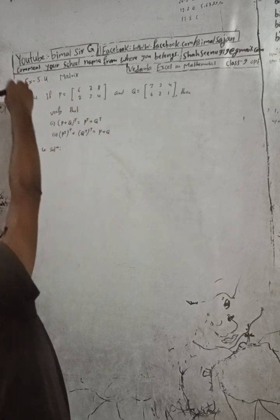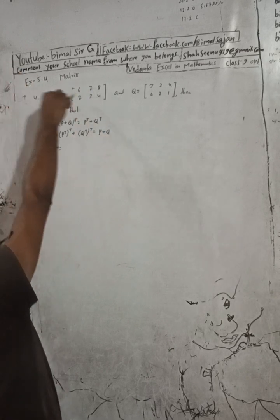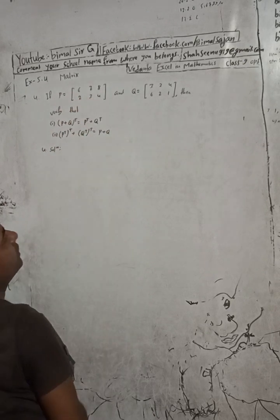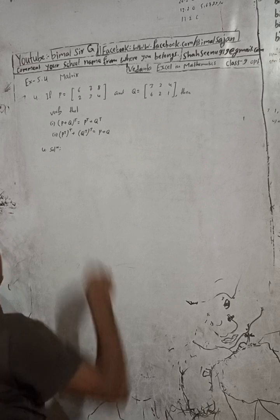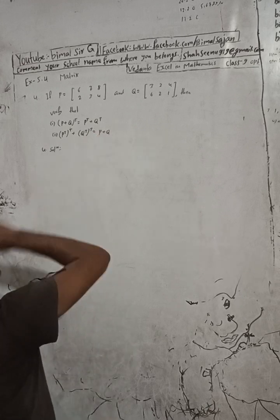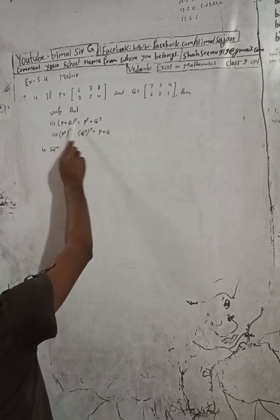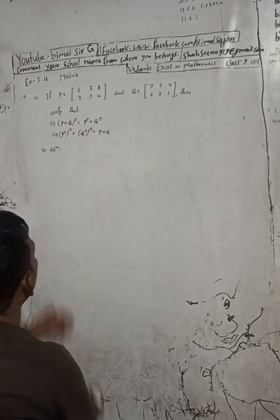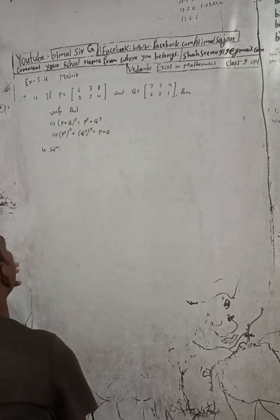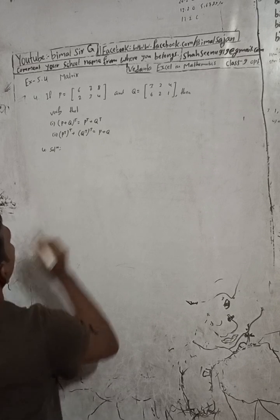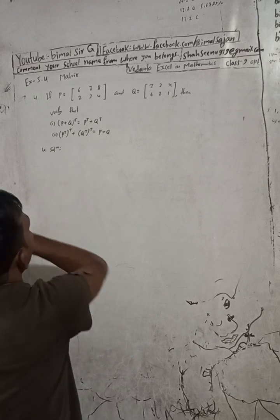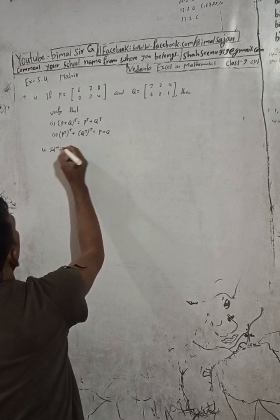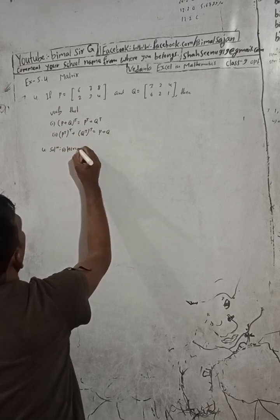Welcome back. Now the question is: if P is equal to [6 7 8 / 2 3 4] and Q is equal to [3 2 4 / 6 2 1], then verify. There are two parts — number 1 and number 2. For (P + Q) transpose, we have to find P transpose and Q transpose. So here, first we write the given, okay, solution here.